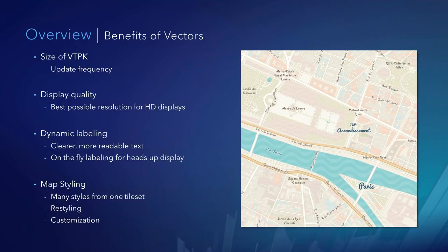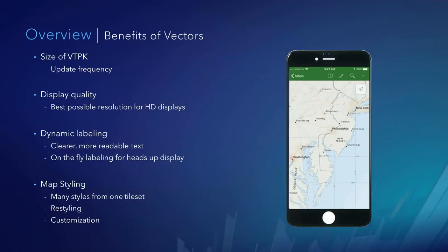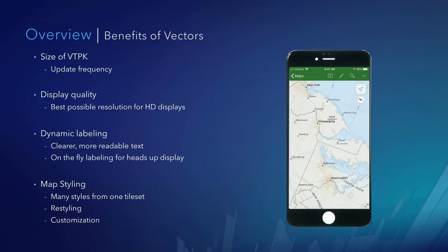The vector display is a lot better. You get the best possible resolution on high-definition displays. It also allows for dynamic labeling — clearer, more readable text, and on-the-fly labeling for heads-up display. In Explorer for ArcGIS, if you rotate the vector map within the window, you can see that the text stays in a horizontal, easy-reading position because it's a vector basemap. And then there's map styling, which is the basis of this webinar today. Vector basemaps allow you to create many different styles and customize to your needs, all from one single tile set.